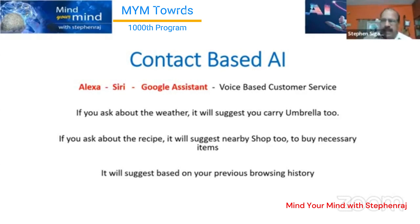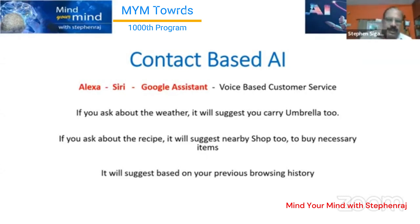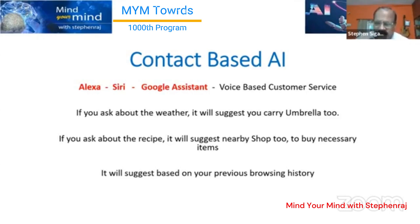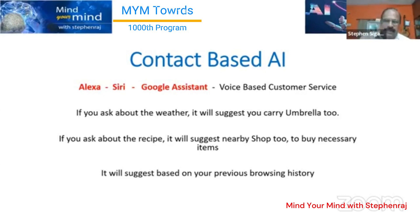If you have a call, it will notify you — for example, 'Your wife is calling.' You can connect or disconnect the call. If you have a message, you will be able to send or receive a message.